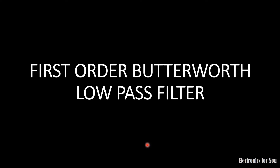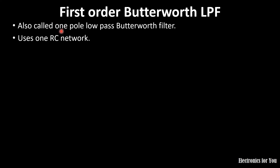Hello friends. In this video I will talk about first order Butterworth low pass filter. First order Butterworth low pass filter is also called as one pole low pass Butterworth filter, as for simple filters order and pole are the same concept. This order and pole are related with the RC network, or we can simply say it is related with the reactive component, so it will have one RC network or one reactive component.